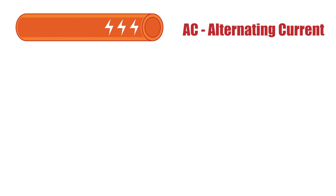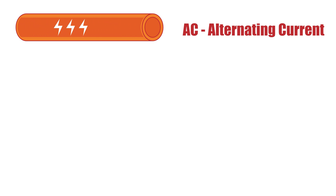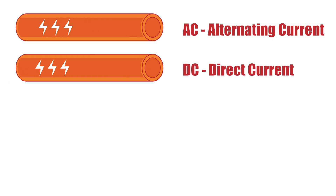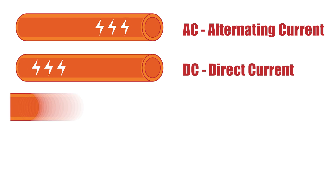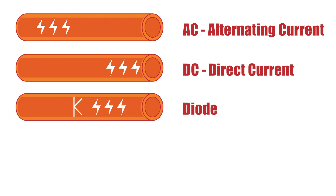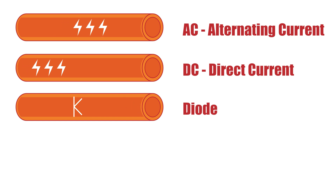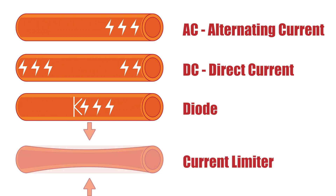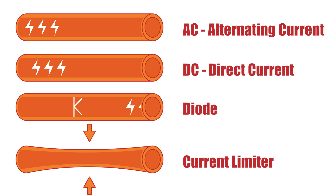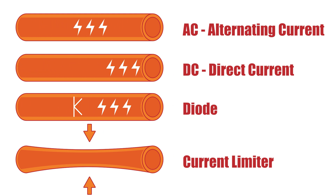AC, or alternating current — current that changes direction periodically, used in most household and commercial power systems. DC, or direct current — steady current that flows in one direction, commonly used in batteries. Diode — allows current to flow in one direction while blocking flow in the opposite direction; think of it as a one-way gate for electricity. A current limiter — this restricts excess current flow, protecting circuits from overloading.